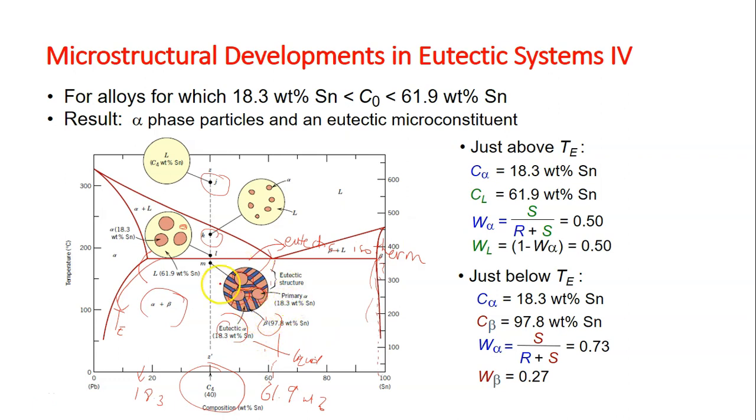This is very important to understand. Right after crossing Te, we have primary alpha, and we also have the eutectic alpha and beta which results from the liquid part.